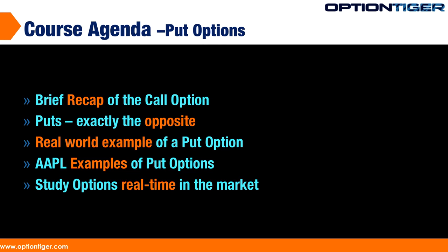You're going to learn two things about put options. First, it is a right to sell an asset — whether it's a car, a stock, or a house — at a certain predetermined, pre-agreed price. The second thing is that the value of a put option increases if the value of that asset goes down. So it's a bearish instrument: whenever the value of the asset goes down, the value of the put option increases.